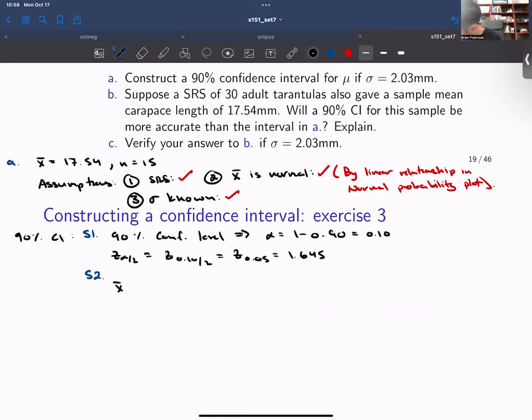Step two, X bar plus or minus Z alpha over 2 sigma divided by the square root of n.